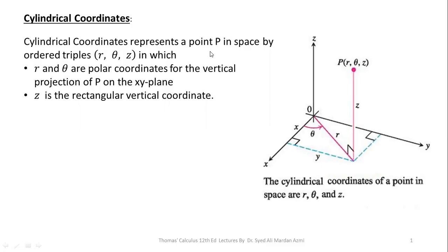Cylindrical coordinates represent a point P in space by an ordered triplet R, Theta, and Z, in which R and Theta are the polar coordinates of the vertical projection of P on the XY plane. Z is the rectangular vertical coordinate.